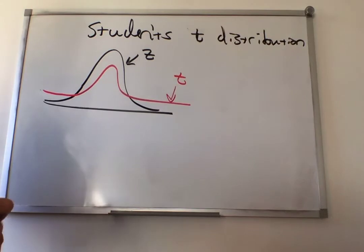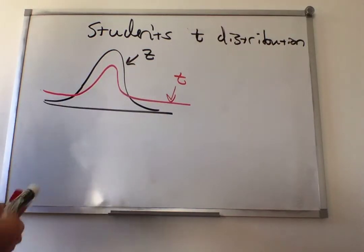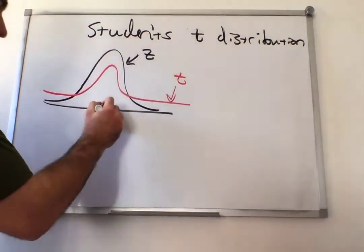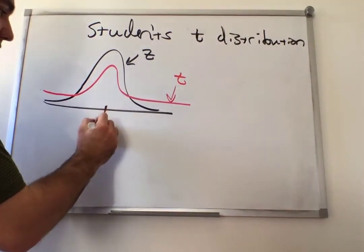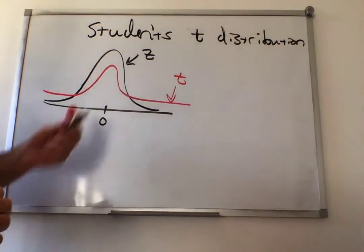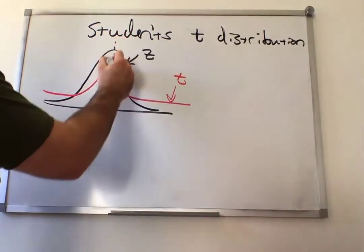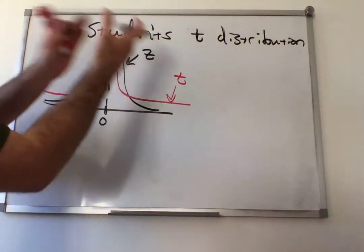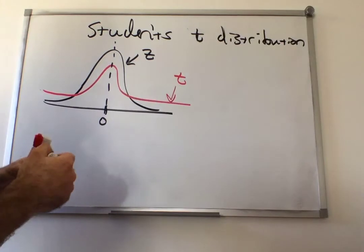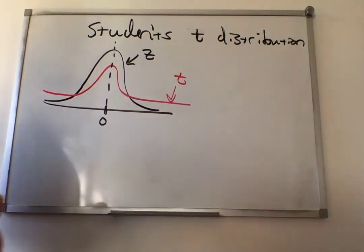When we're using the z-distribution, the mean is always zero — that's also true for the t-distribution, and it's also symmetric about zero. So if you draw a line down the center and flip one half over, it matches the other half. The t-distribution has many similar properties to the z-distribution.